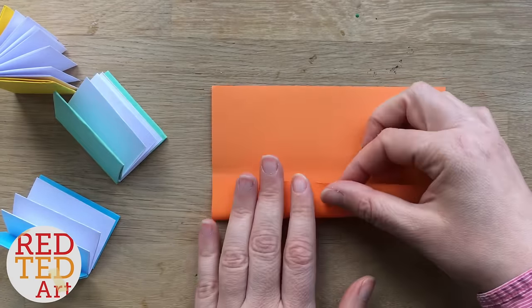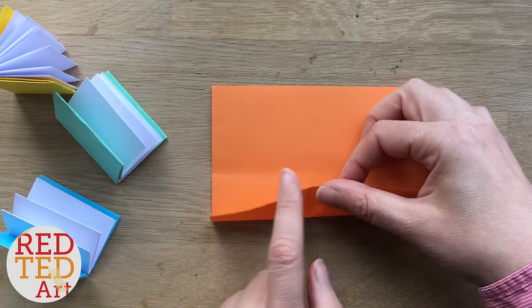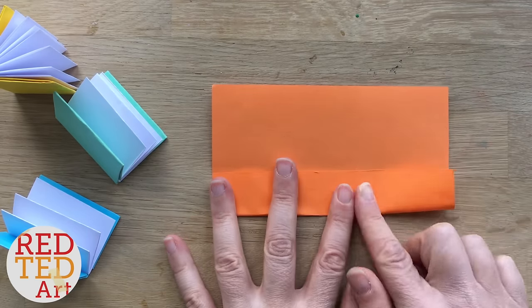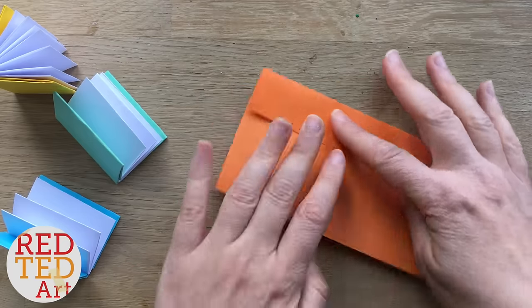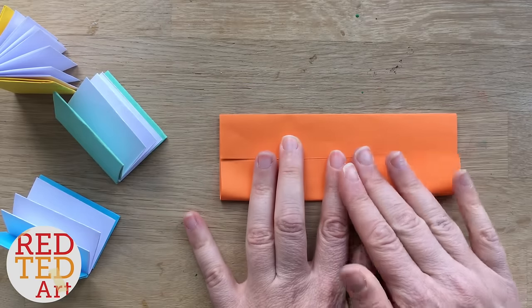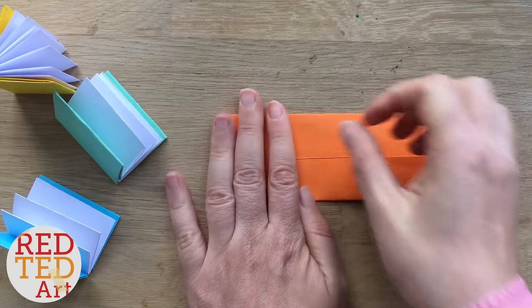Fold, turn it around, repeat. Bring the outside edge all the way to the middle and make sure you've got nice neat creases. This time I'm going to fold it in half that way, so bring that side over to meet the other side.